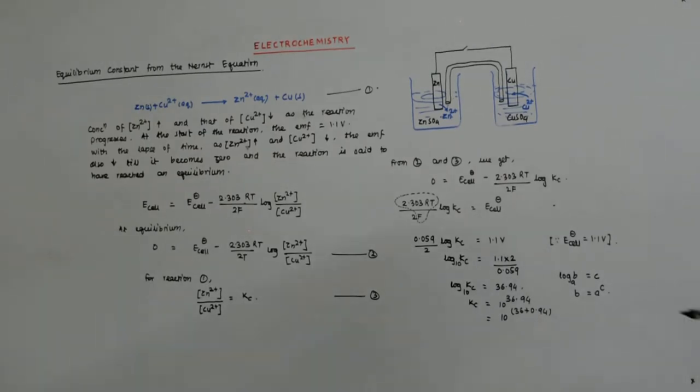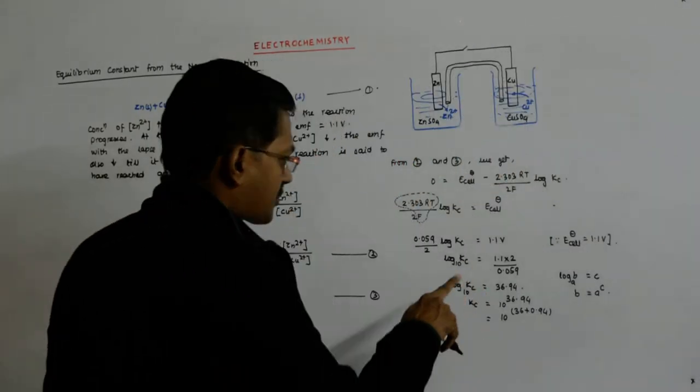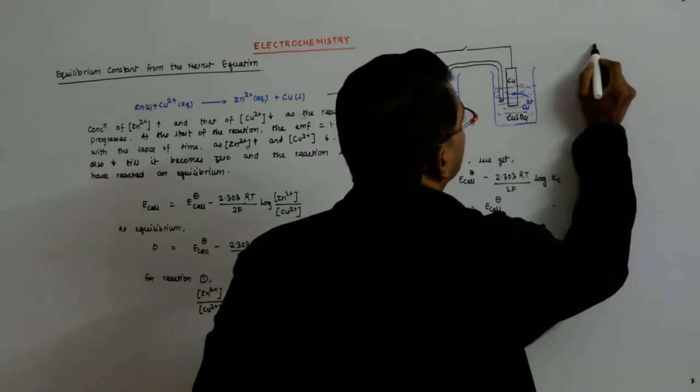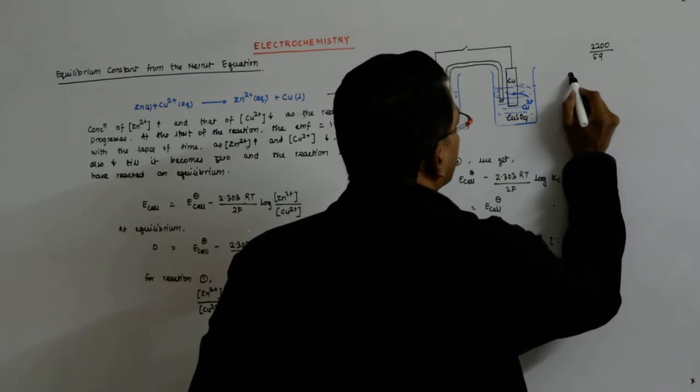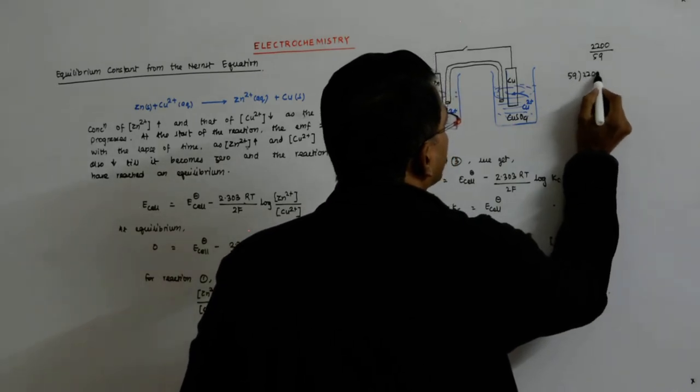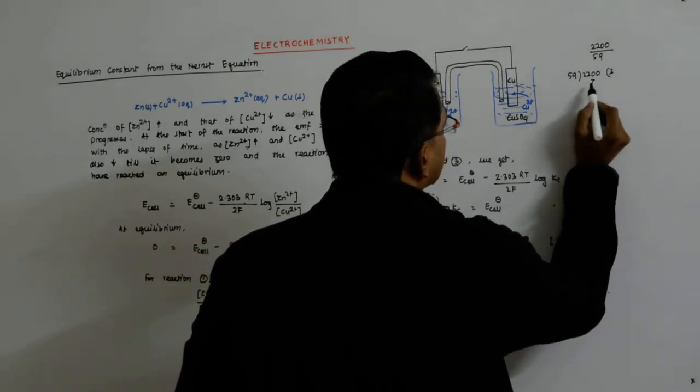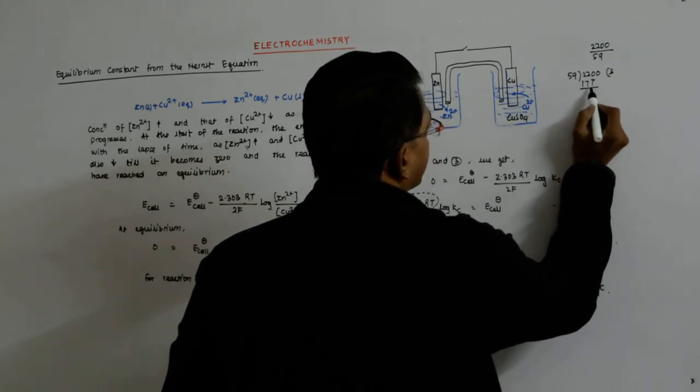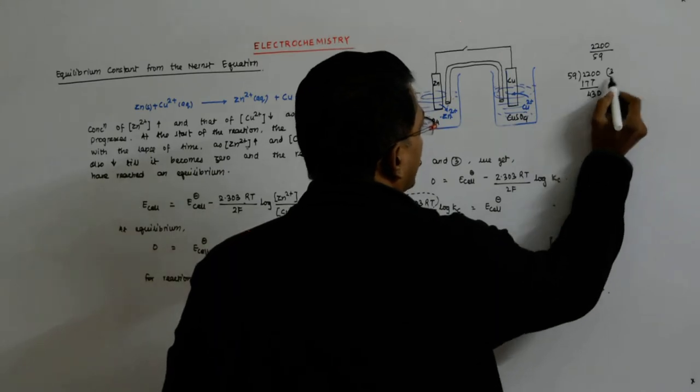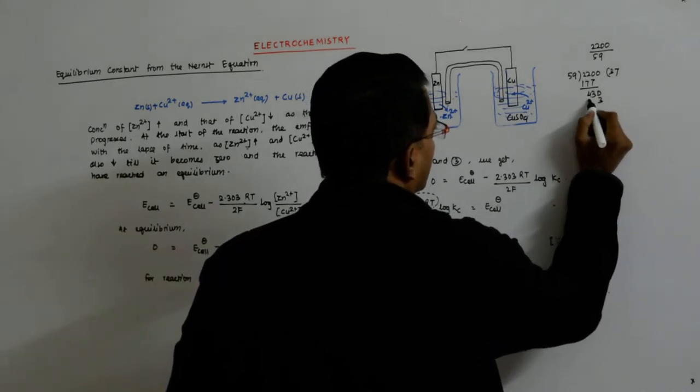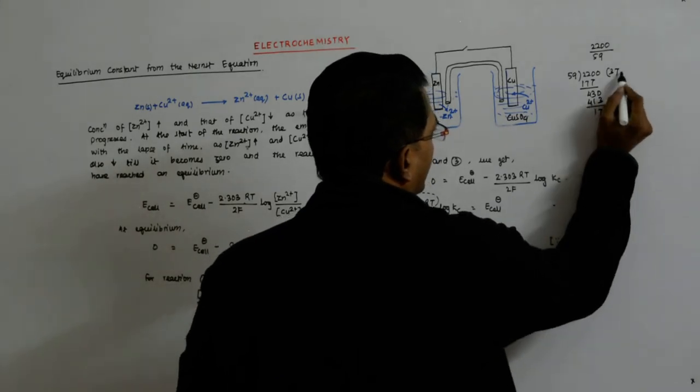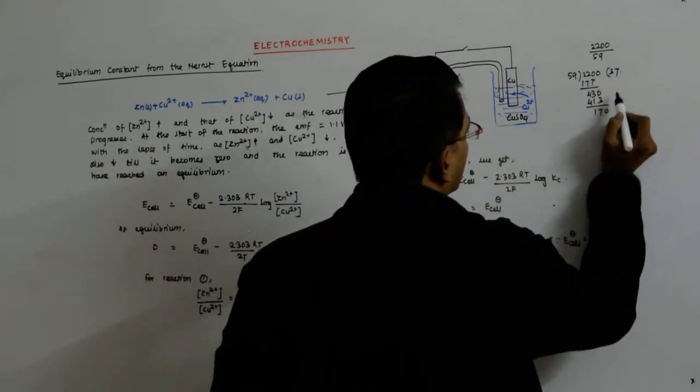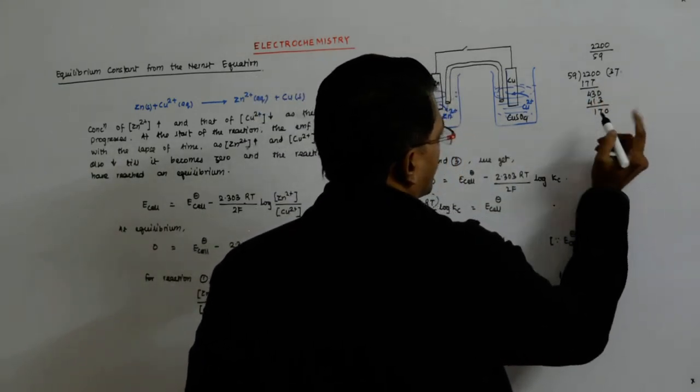Okay, let's do this calculation once again. 2200 divided by 59... 2200, 177, 43, 413, 17. So there was something wrong when I calculated last time, so let me rectify.